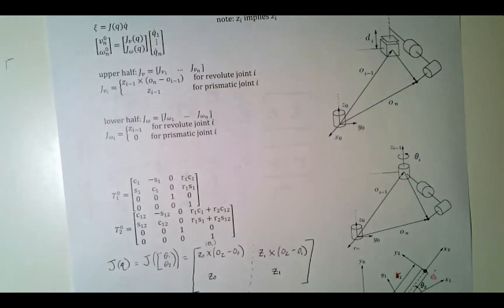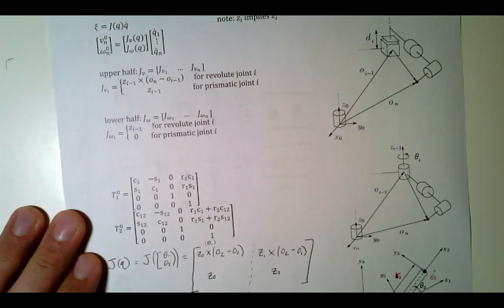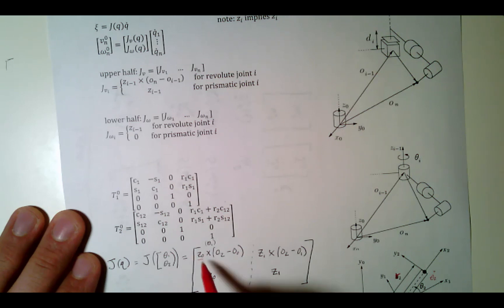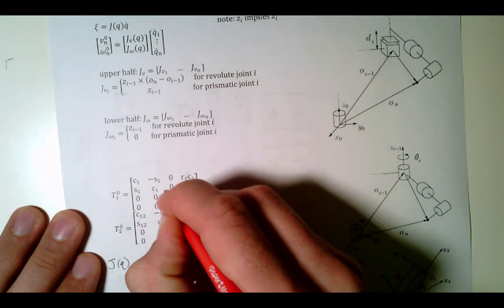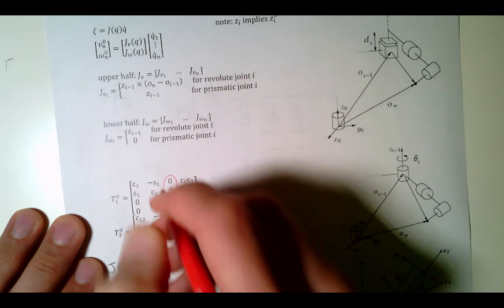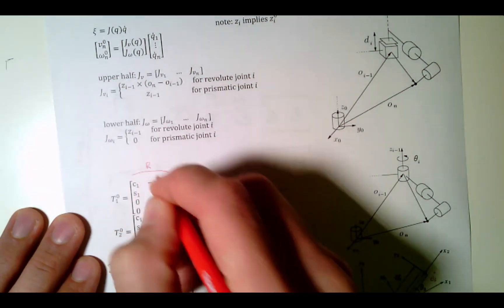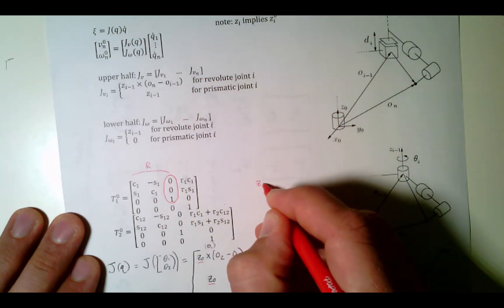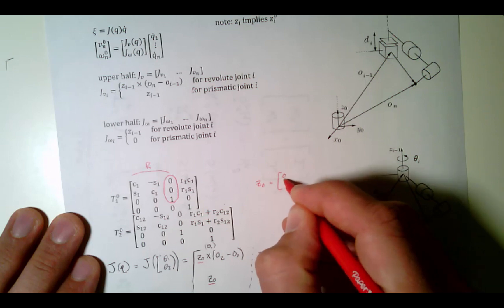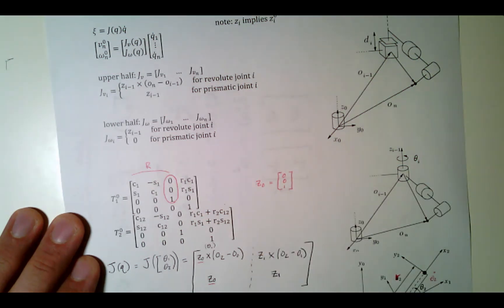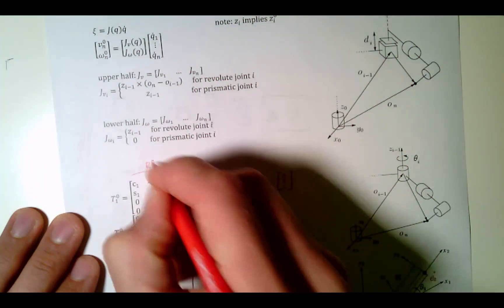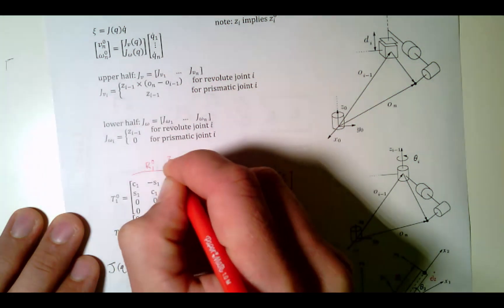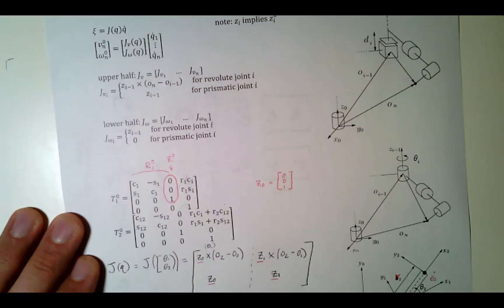Now I need to figure out where these numbers are. First thing I need is where is z0? z0 is equal to [0, 0, 1], because it is our basis vector. But z1 is given by the third column of rotation matrix R1-0. So this column here is z1.